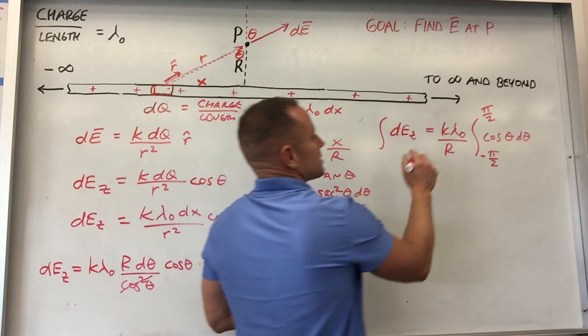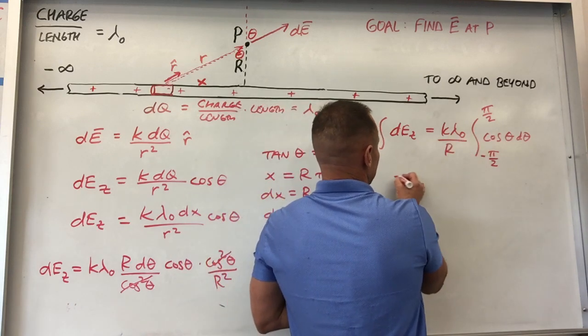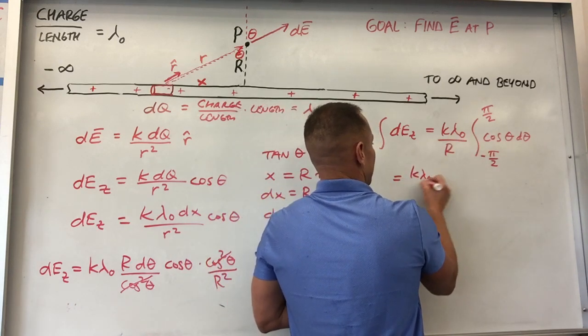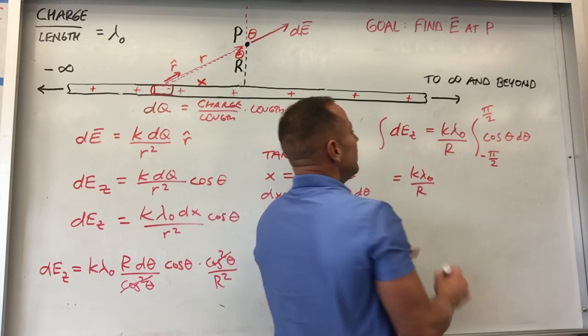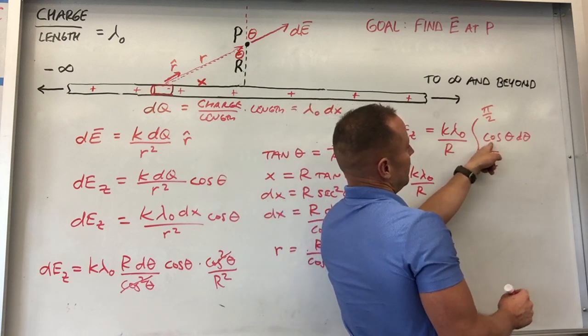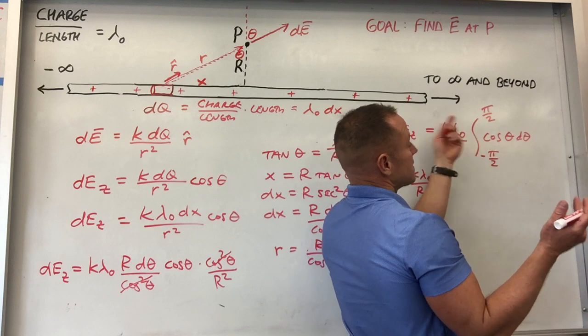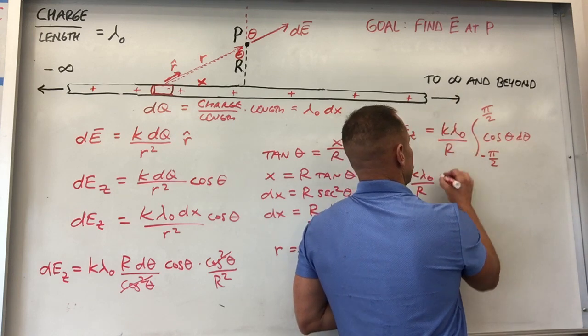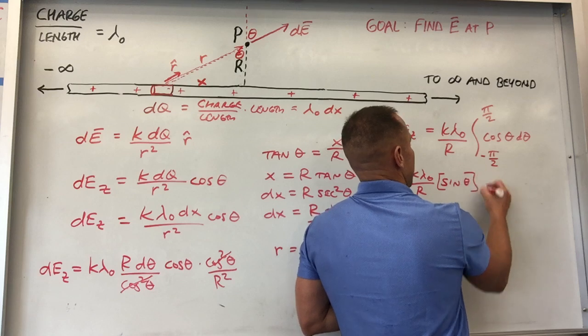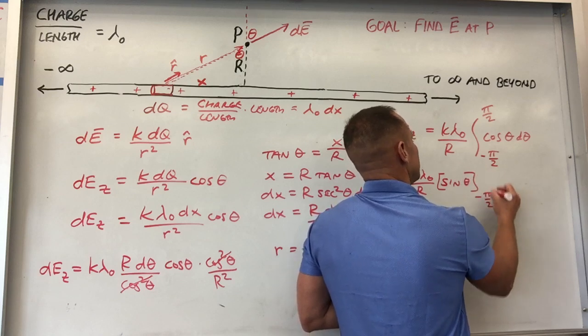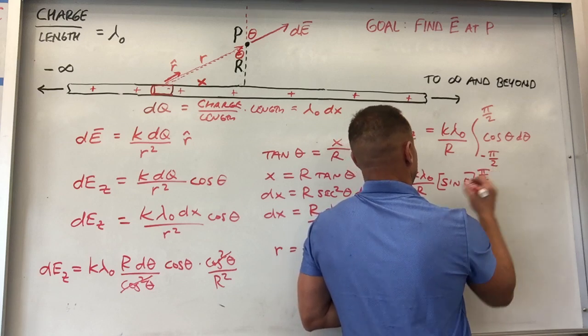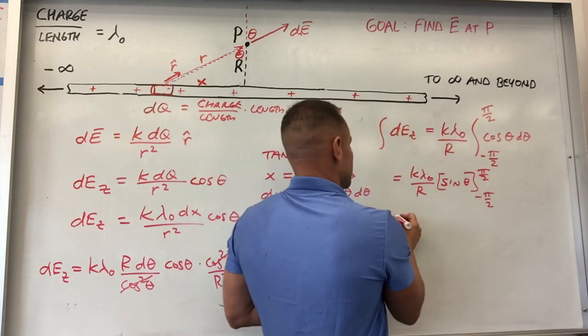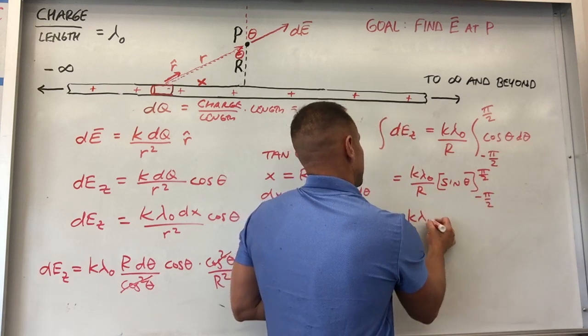All right. And so then let's wrap this up. And so we'll get K lambda naught over R. And then, cosine will integrate to sine, sine theta, because the derivative of sine is cosine. So we'll get sine theta, evaluated at minus pi over 2 and pi over 2. And so let's do this. So you get K lambda naught over R. Sine theta, sine of pi over 2 is 1.